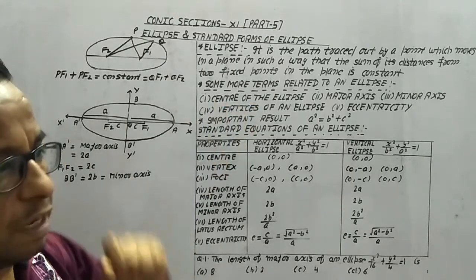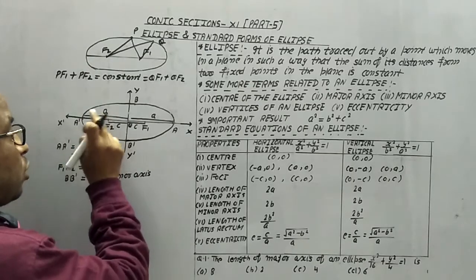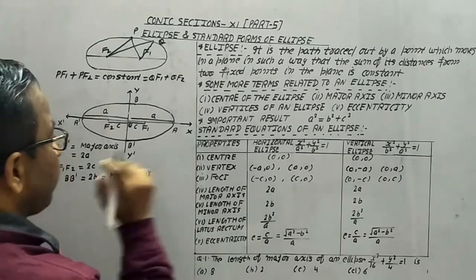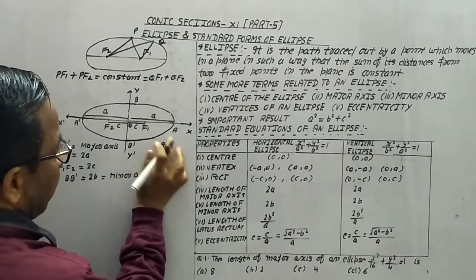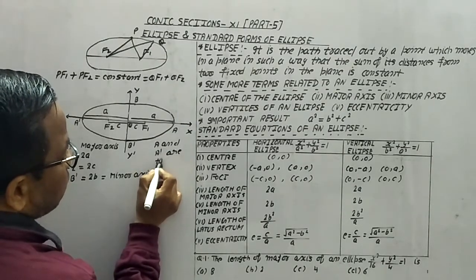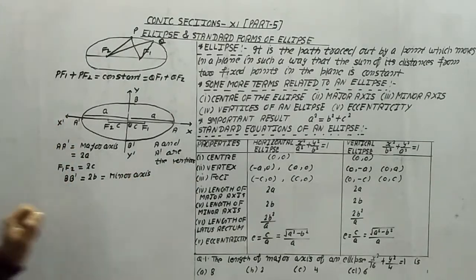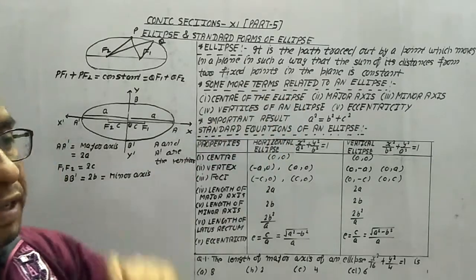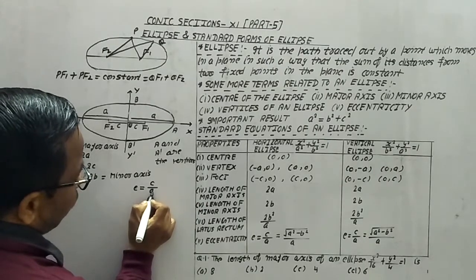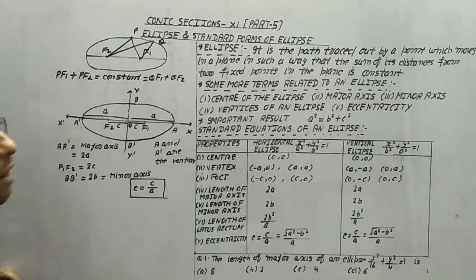Vertices of an ellipse: the end points of the major axis — A and A' — are known as the vertices of the ellipse. Eccentricity is given by the ratio e = c/a, and this is known as the eccentricity of the ellipse.